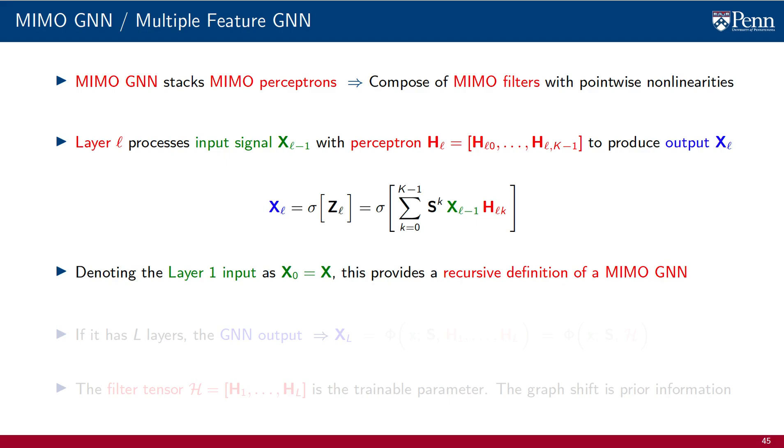Agreeing, as we did before, that the input to layer 1, which is the given signal X, be reinterpreted as the output of the non-existent layer 0, the equation above provides a recursive definition of a MIMO GNN. We are writing the input to the GNN as a matrix graph signal with multiple features. But it is allowed to have inputs with single features. Indeed, it is often the case. The output of the MIMO GNN is the result of stopping the recursion after L iterations. Again, we are writing the output as a matrix graph signal with multiple features, but it is allowable to have outputs with single features. The MIMO GNN is a function class phi that is parametrized by the shift operator S and the set of filters H1 through HL.